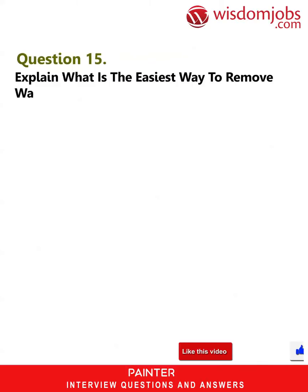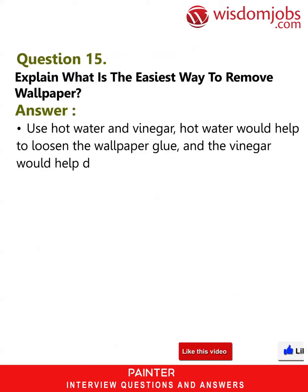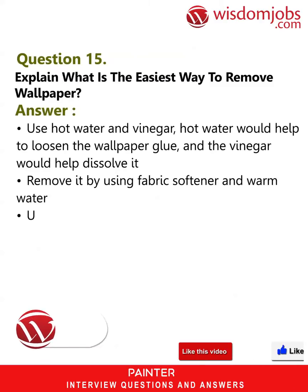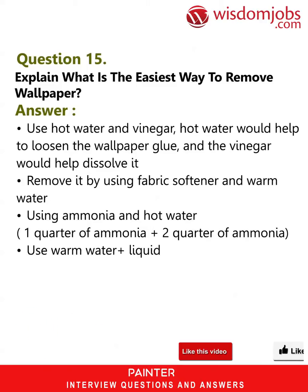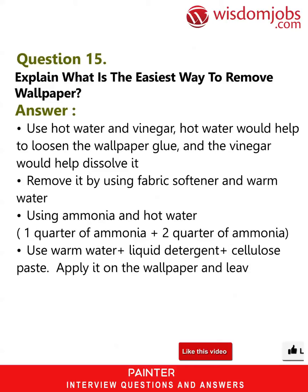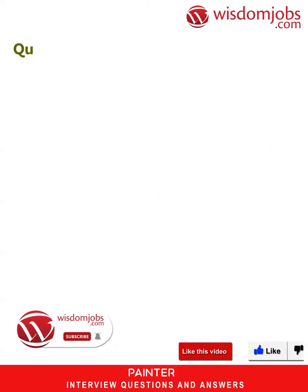Question 15: Explain what is the easiest way to remove wallpaper. Answer: Use hot water and vinegar — hot water helps loosen the wallpaper glue and vinegar helps dissolve it. You can also remove it using fabric softener and warm water, or using ammonia and hot water — one quarter ammonia plus water. Another method is warm water plus liquid detergent plus cellulose paste: apply it on the wallpaper, leave it for five minutes, then start pulling off the wallpaper. You can also use a steam wallpaper stripper.